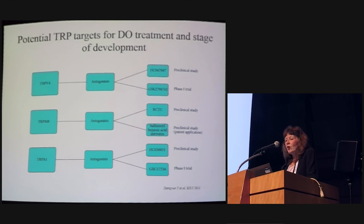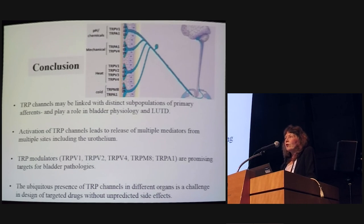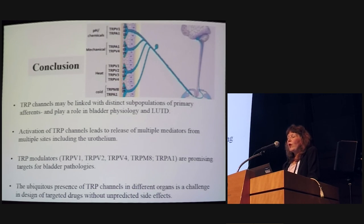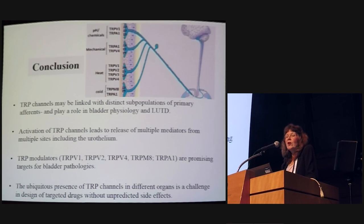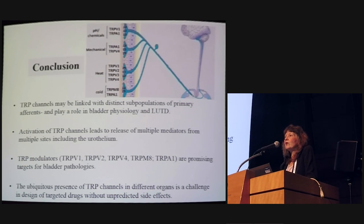In conclusion, TRP channels may be linked with distinct subpopulations of sensory afferents, and we are learning more about this over time. They clearly play a role in bladder physiology and pathology. Activation of these channels releases a number of mediators, including those expressed in the urothelium. While TRPV1, TRPV4, TRPA1, and others are clearly prominent targets for bladder pathology, the ubiquitous presence of these channels across many different organs remains a significant challenge for effectively targeting them without unprecedented side effects.